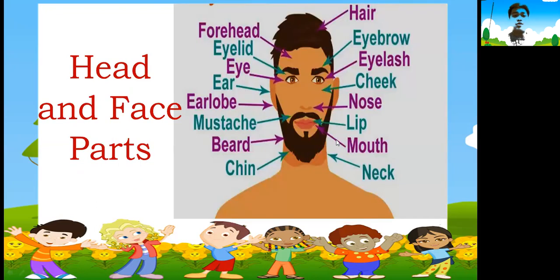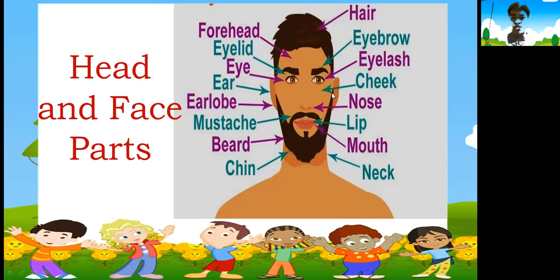Now let's move to the head and the face. Everybody repeat after me: hair, eyebrow — actually there are two, so we say eyebrows — eyelash, cheek. Others have a reddish cheek, others have a pinkish cheek. We have nose — nose helps us breathe.